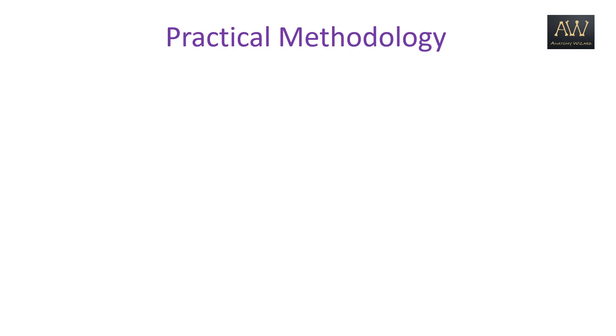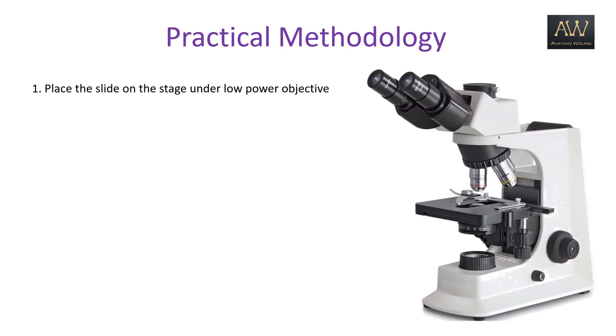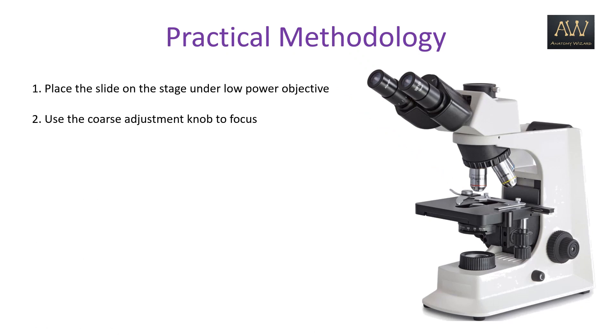Before we begin identification of various epithelial tissues, there are certain steps required to be followed to facilitate correct identification of the tissue. Firstly, place the slide on the stage under the low power objective. Then use the coarse adjustment knob to focus onto the tissue.